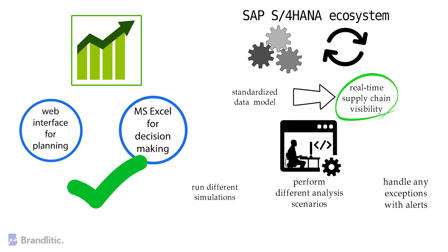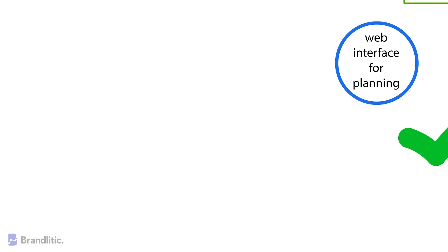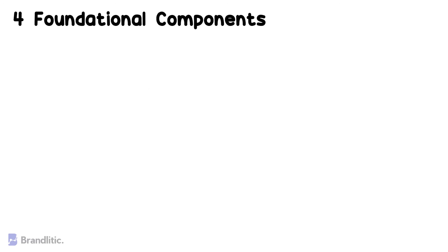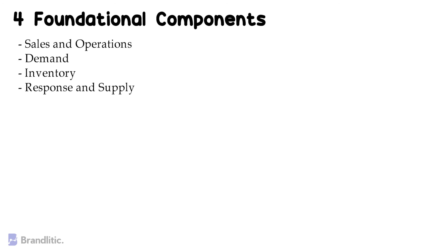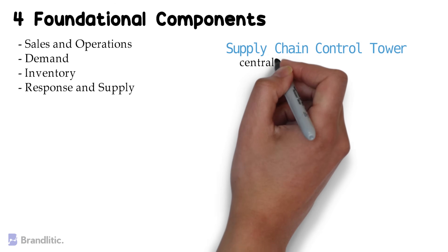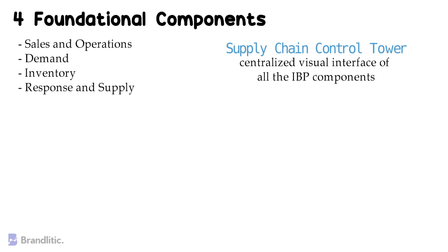SAP IBP is made up of four foundational components: sales and operations, demand, inventory, and response and supply. The supply chain control tower acts as the central visual interface of all the IBP components, and each component is independent — you can use only what you need, whenever you need it.